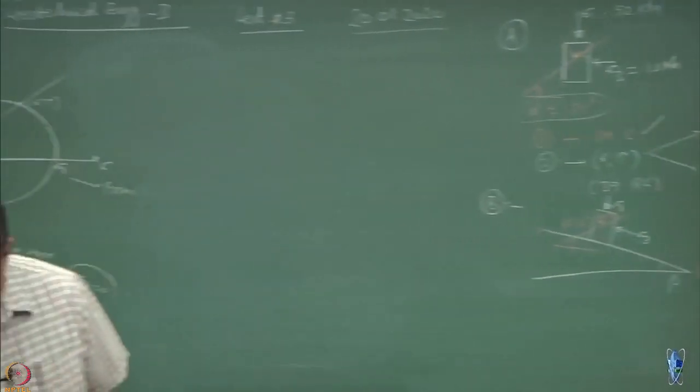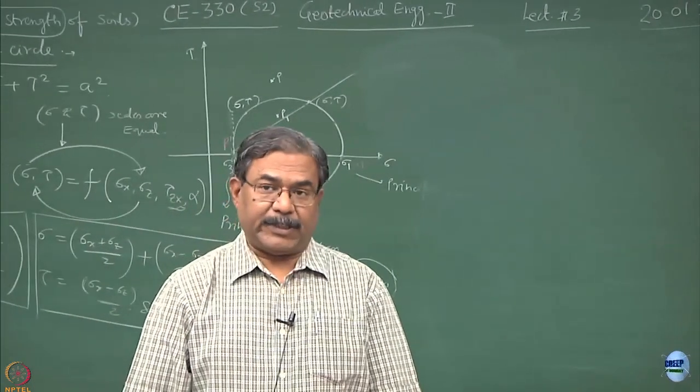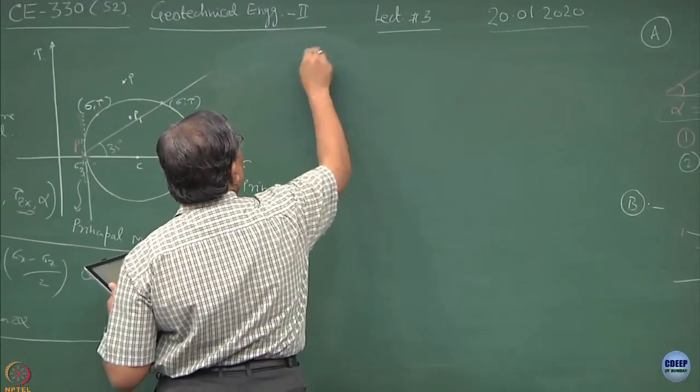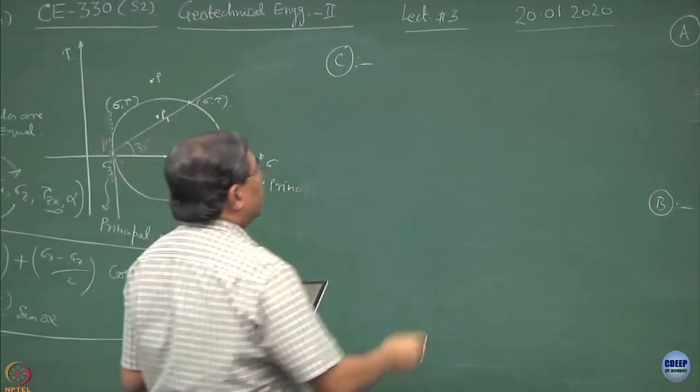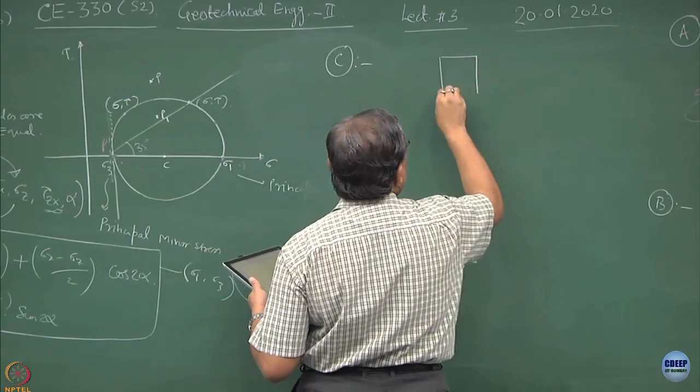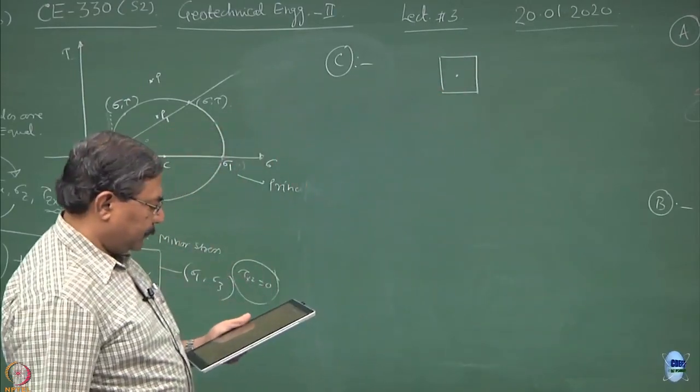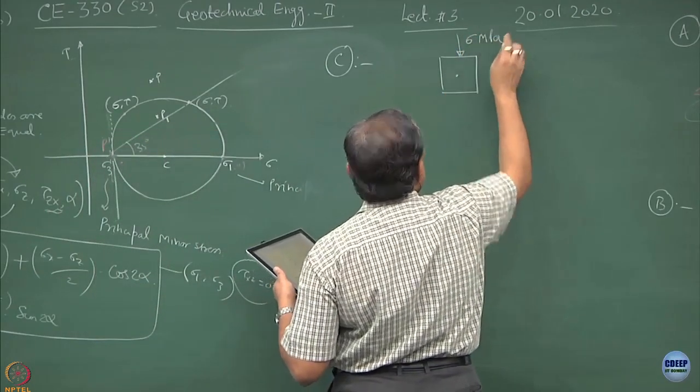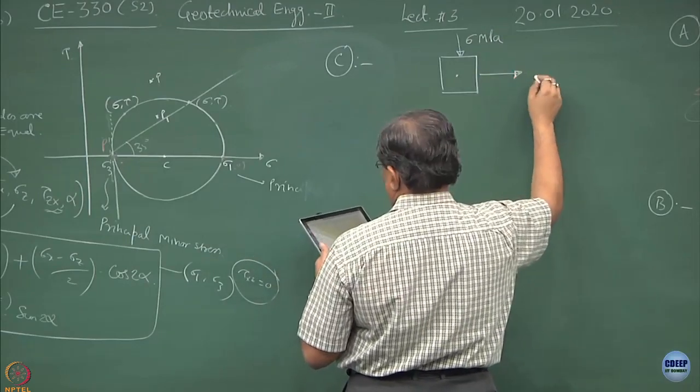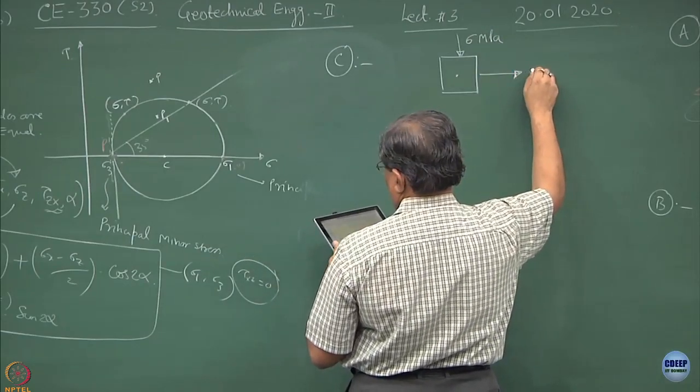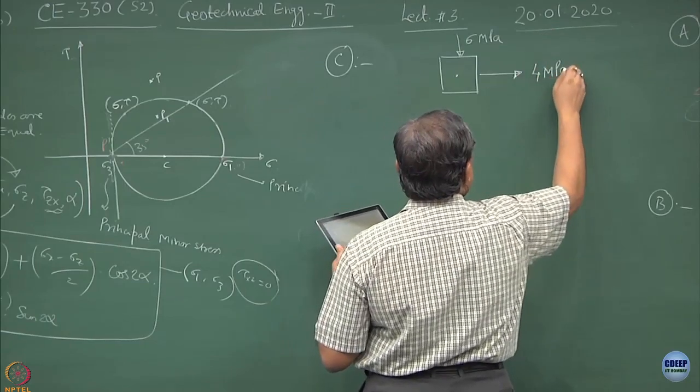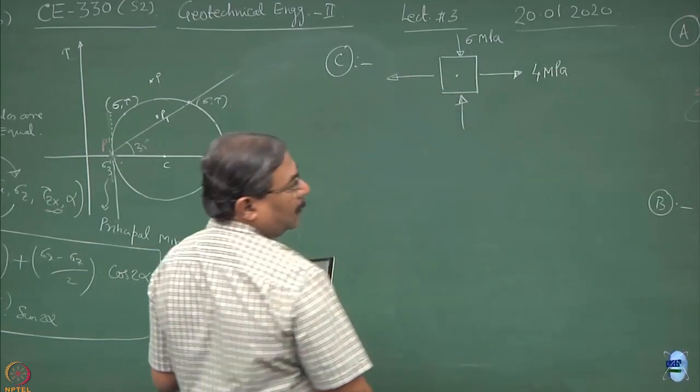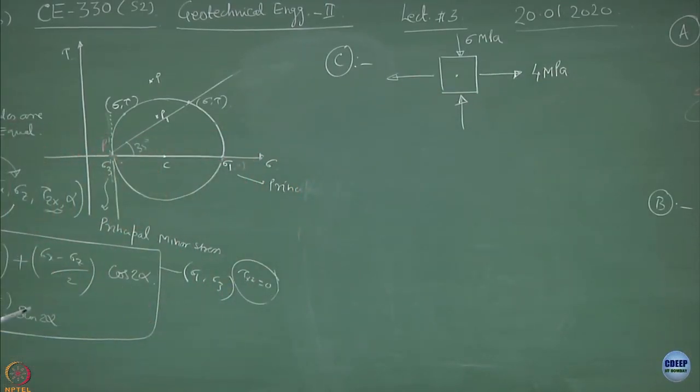Now let us take a situation where we call it as a generalized state of stress. So this is the C type of problem. The state of stress is defined as this is the element of the soil. You have a compressive stress acting over here, there is a tensile stress acting over here. This is the compressive stress, this is the tensile stress, so tensile stress is always negative, compressive stresses are always positive.